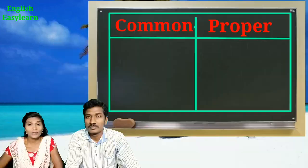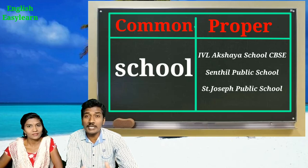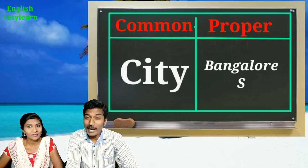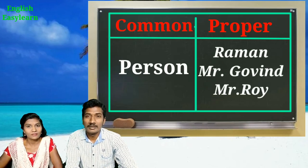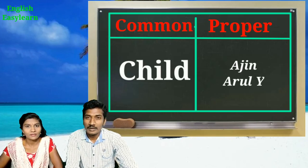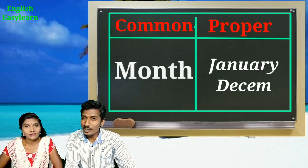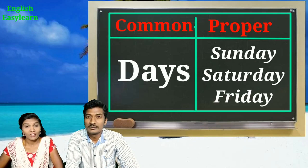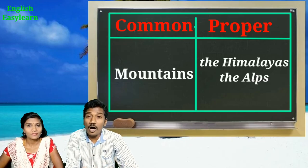Now let me give some common nouns — can you tell the proper noun for each? School: IVL Akshaya School CBSC, Sindhi Public School, Saint Joseph Public School CBSC. Boy: Ramu, John, William, Shakespeare. City: Bangalore, Salem, Chennai, New York. Person: Raman, Mr. Govin, Mr. Roy. Child: Ajin, Arul, Yalini, Regin, Riyan. Month: January, December, February. Days: Sunday, Saturday, Friday. River: the Ganga, the Godavari.